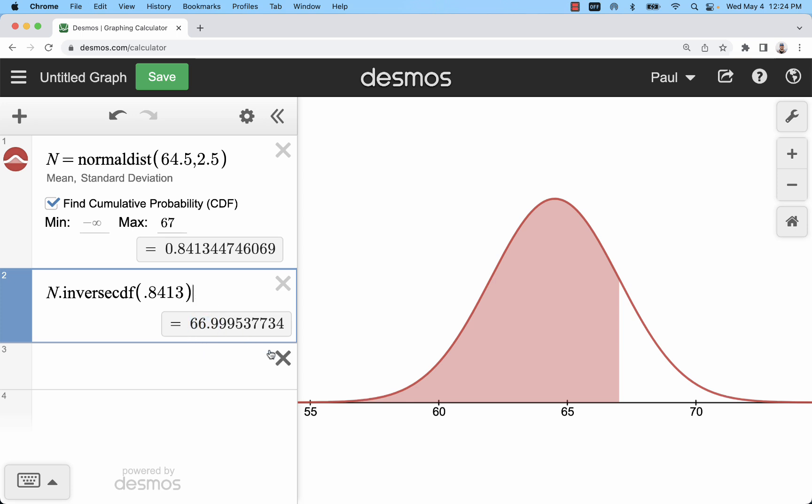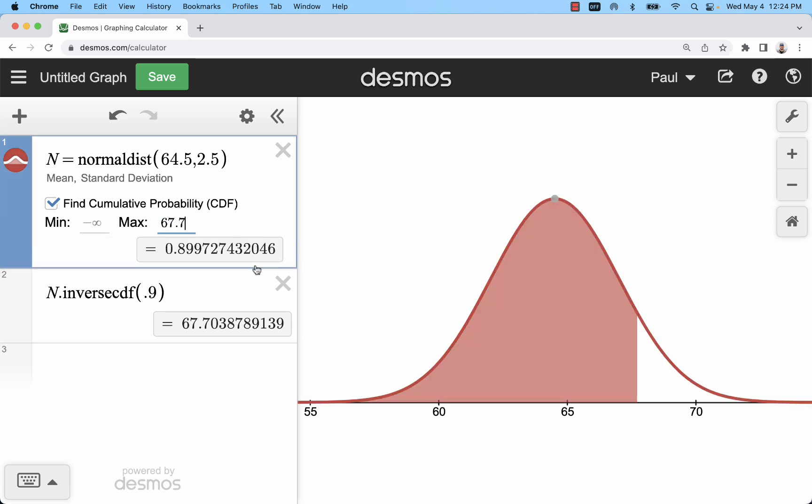A little bit of rounding error. Or I could just look up some unknown like the 90th percentile would be 67.7 inches and then I can check that here. That's about the 90th percentile there. So that's how you'd use it in Desmos for more precision and to be able to use those outputs to do further calculations.